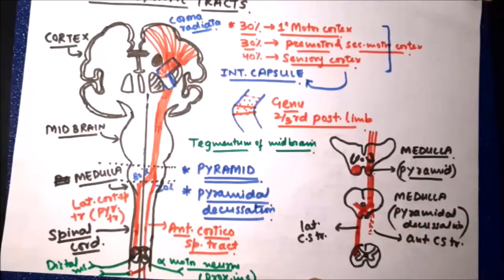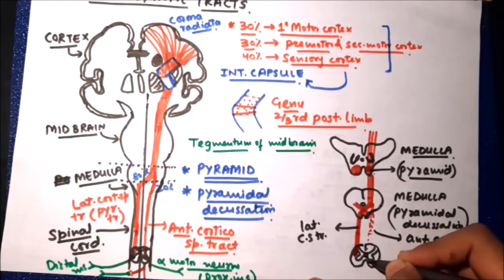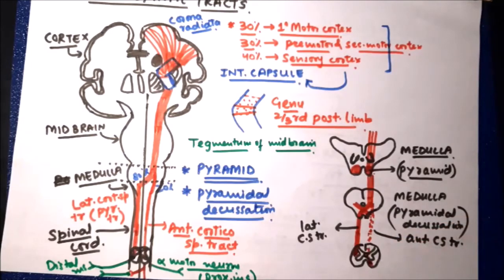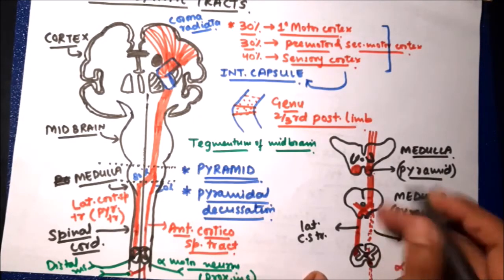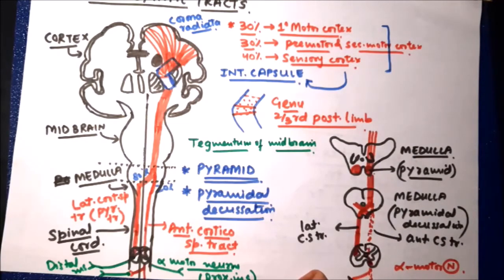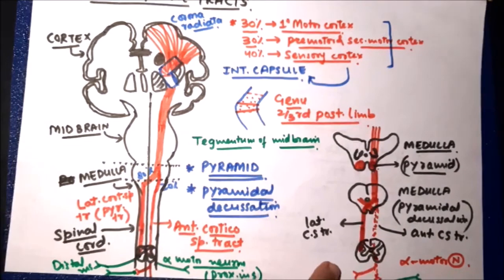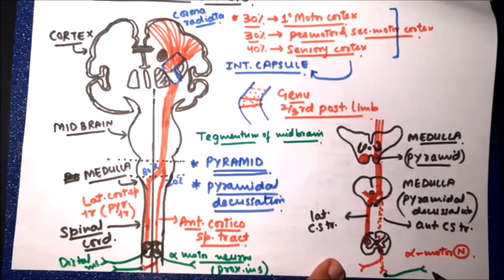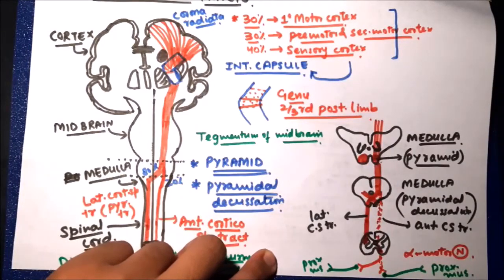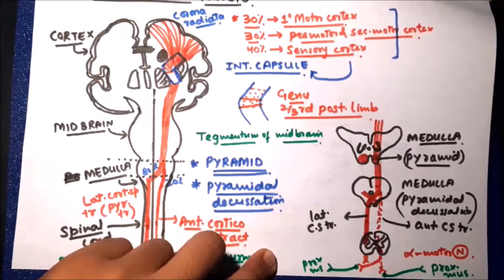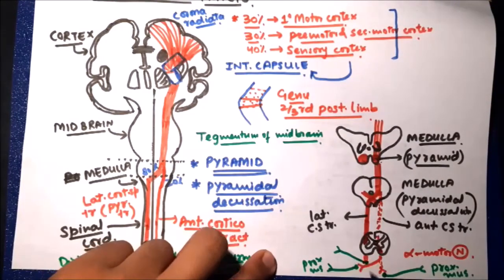Both tracts descend through the spinal cord — the lateral corticospinal tract in its lateral position and the anterior corticospinal tract in its anterior position. The anterior corticospinal tract innervates the proximal muscles of both sides — both right and left — whereas the lateral corticospinal tract fibers end at anterior horn cells and innervate only the distal muscles of the same side.